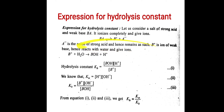This part is important: when BA undergoes ionization it forms B⁺ and A⁻. A⁻ is the anion of the strong acid and hence remains as such, while B⁺ is the ion of the weak base and reacts with water. B⁺ reacts with water to form BOH and H⁺. The hydrolysis constant KH is given as the molar concentration of BOH times the molar concentration of H⁺, divided by the molar concentration of B⁺.